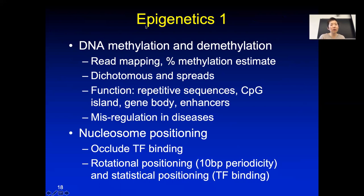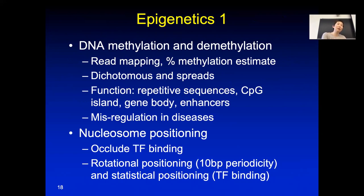Because of that, people became interested in epigenetics. Early on, people were very interested in DNA methylation and demethylation. For DNA methylation, we talked about bisulfite sequencing. Bisulfite sequencing converts C to T, so in the read mapping stage we need to make sure we map both C and T. Based on the C-to-T percentage, we know the percentage of methylated versus unmethylated C at that location. For DNA methylation in one particular cell, it's usually zero or one — either unmethylated or methylated.